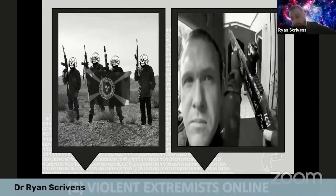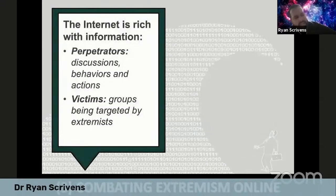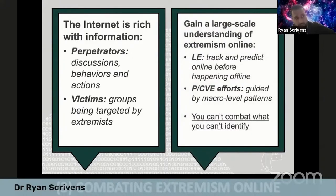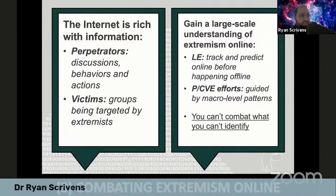Equally important is combating extremism online. The internet is rich with information on the perpetrators — their discussions, behaviors, actions, and networks — but it's also rich with information on the victims. It can be helpful to gain a large-scale understanding of extremism online, because it can help law enforcement track and maybe predict online activity before it happens offline. If we gain a large-scale understanding of the grievances expressed by perpetrators or who they're targeting, this could help with PCVE — preventing or countering violent extremism initiatives. Simply put, you can't combat this material if you can't identify it on the internet.